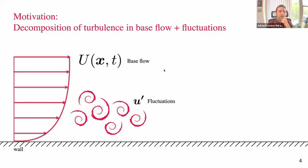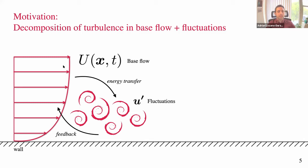Let me use a sketch to motivate the problem and introduce the notation. I'm going to talk about wall turbulence, so there will always be a wall. I'll decompose my flow into two components: a base flow (capital U), which can depend on X and time, and fluctuations — everything else that is not the base flow. There will be some interaction; we can write down equations for these two velocity fields and find energy transfer from the base flow to the fluctuations.